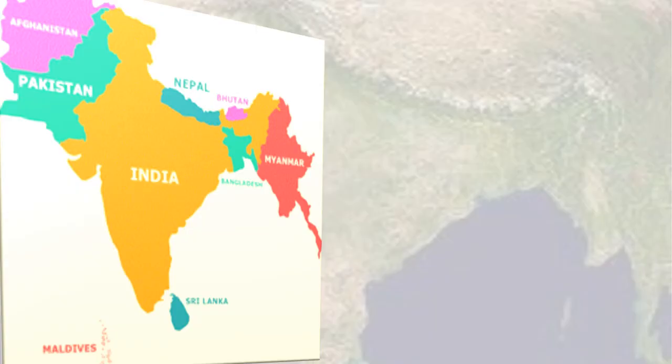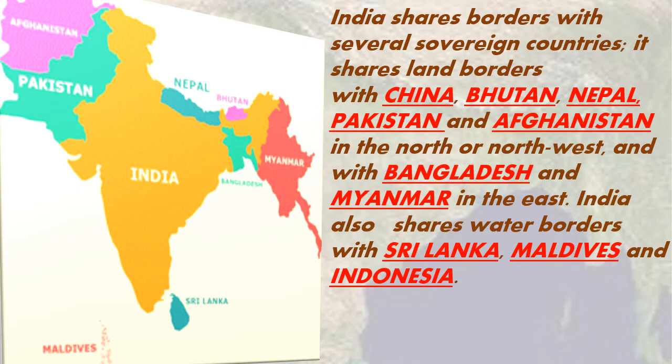South of the Tropic of Cancer lies Peninsular India, a triangular mass projecting into the Indian Ocean. It is surrounded by water on three sides — the Arabian Sea in the west, the Bay of Bengal in the east, and the Indian Ocean in the south. The location of India has helped in the development of trade and commerce. The existence of seas on three sides has encouraged international trade. From ancient times, India has had political, economic, and cultural links with other countries.